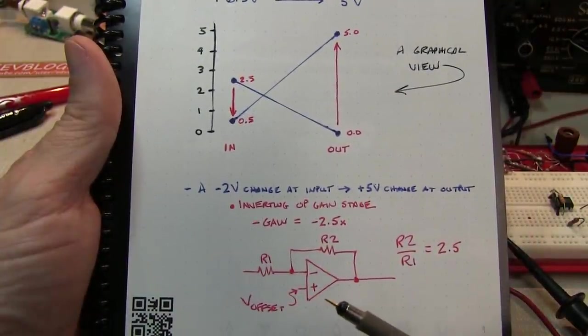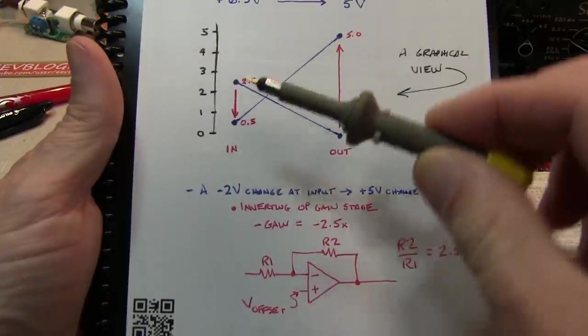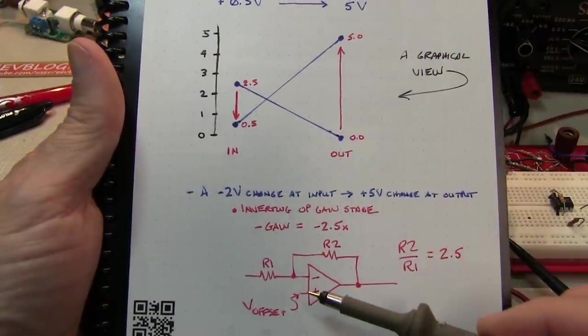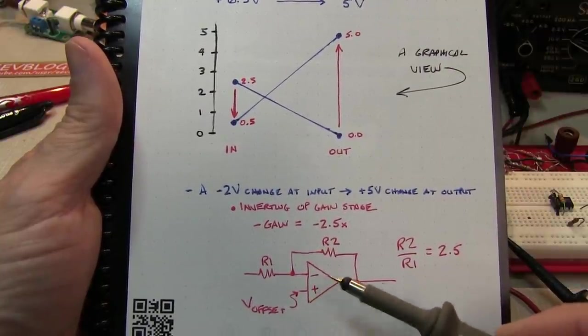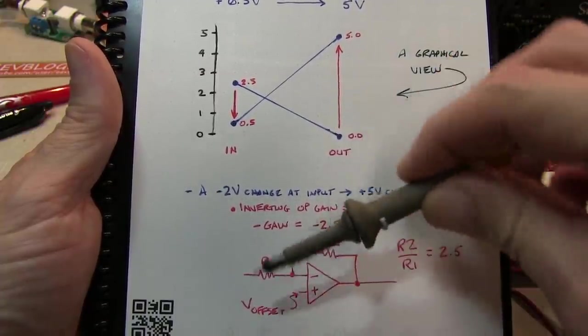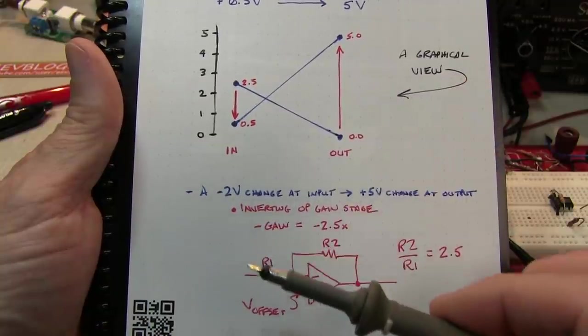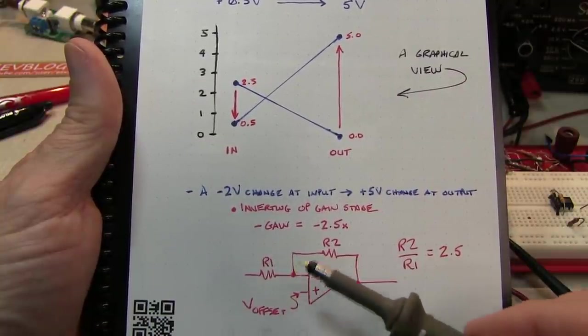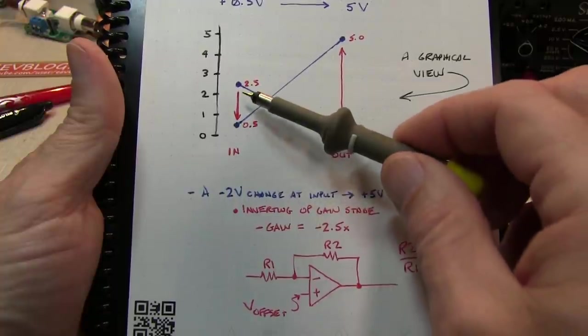That's exactly what an inverting op-amp does. It essentially seesaws around the offset voltage. In most cases people look at op-amp circuits, this non-inverting input is at 0, and the voltage seesaws around that 0 volts.